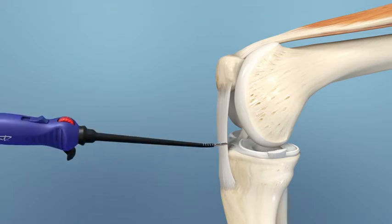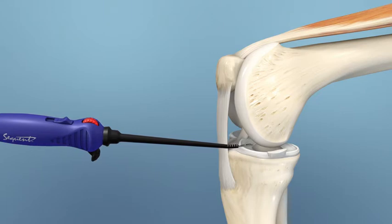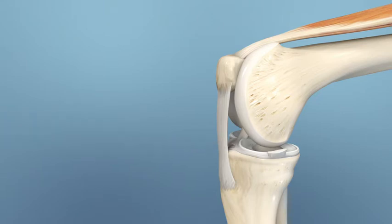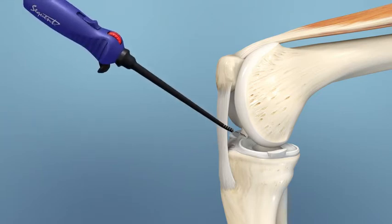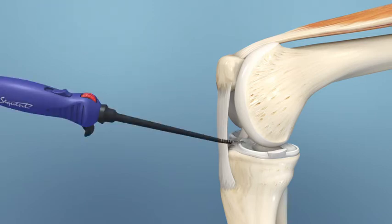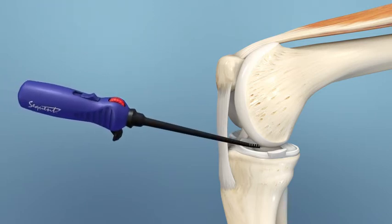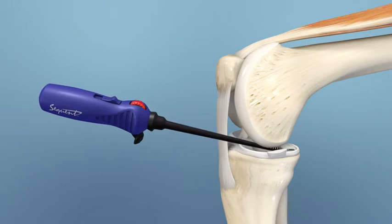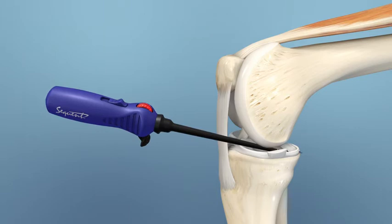A portal placed too low increases interference with the femoral condyle. A portal placed too high increases interference with the tibial plateau. Appropriate portal placement and vertical incisions allow for compensation of tibial plateau slope as well as room for superior and inferior adjustments.